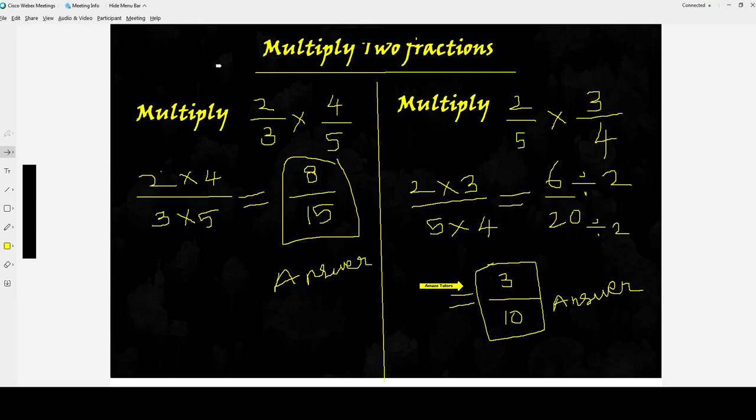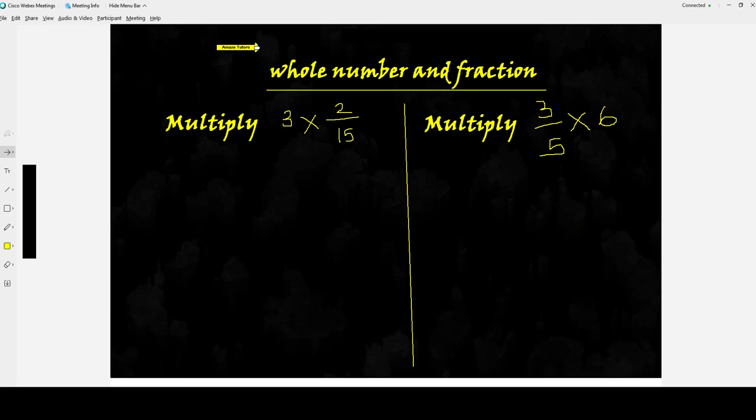Now these are multiplying fractions, but I will show how to multiply whole numbers and fractions. This is again easy. What we have to do is make the whole numbers as fractions by writing the denominator 1. Because 3 by 1 is same as 3, 6 by 1 is same as 6. So whenever you get such questions, one whole number another fraction, don't panic, it's easy. Write 1 in the bottom of the whole number in the denominator and multiply as usual.